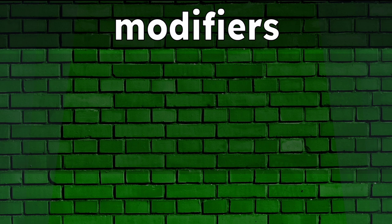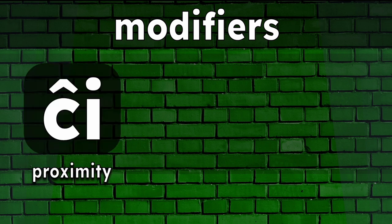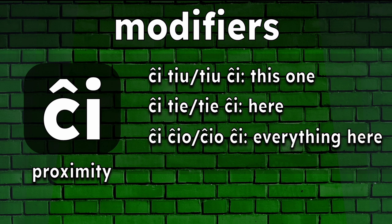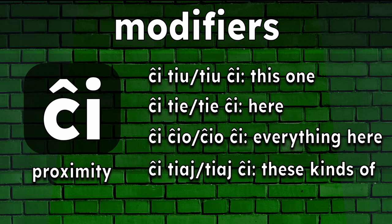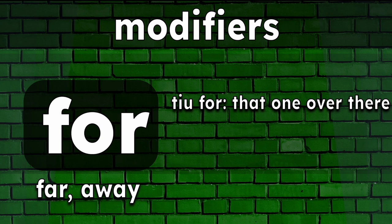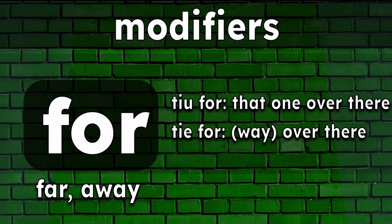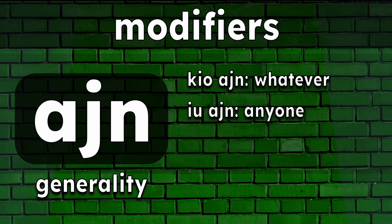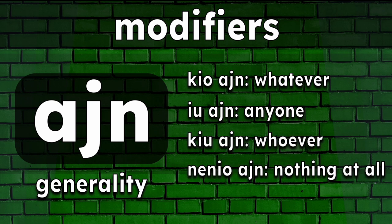We can also use modifiers with correlatives to add nuance. Ĉi- is for proximity — for example, ĉi tiu or tiu ĉi means this one; ĉi tie or tie ĉi means here; ĉi ĉio or ĉio ĉi means everything here; ĉi tiaj or tiaj ĉi means these kinds of. For- is used for something farther away — for example, tiu for means that one over there; tie for means way over there; iru for means go away. -Ajn is used for generality — for example, kio ajn means whatever; kiu ajn means anyone; kiu ajn means whoever; and nenio ajn means nothing at all.